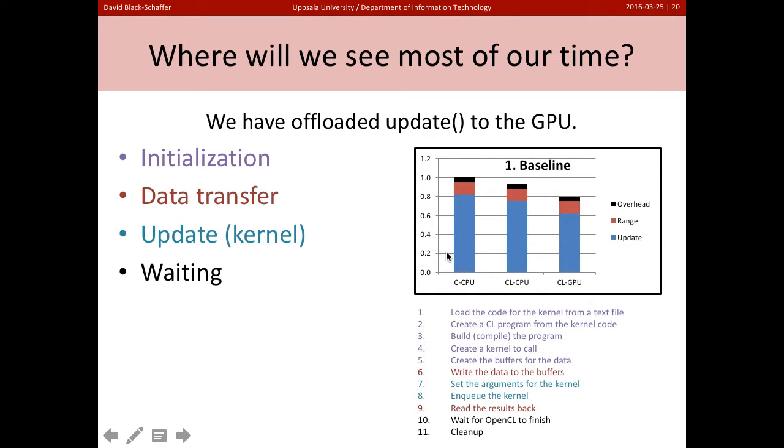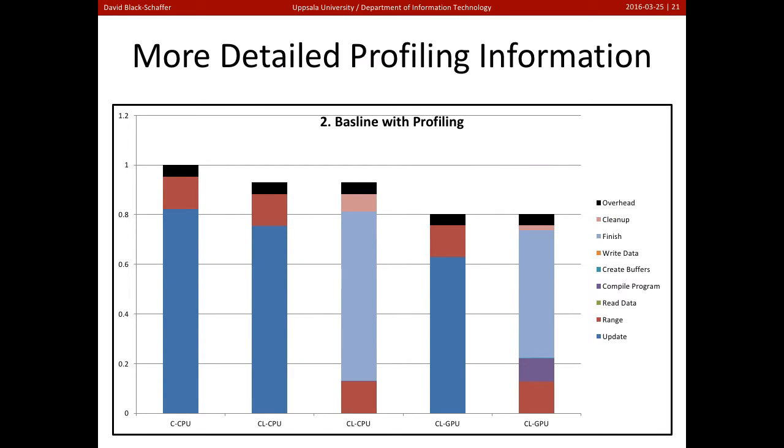Now, where do we expect to see most of our time going? So we've gone in and we're now putting in detailed measurements about all these operations here. Where do we expect to see most of our time? Well, here's what we see. We see that we're not spending any time in update. So no time in update. You can't even see it on the graph here. Yet update is the big calculation we're doing.